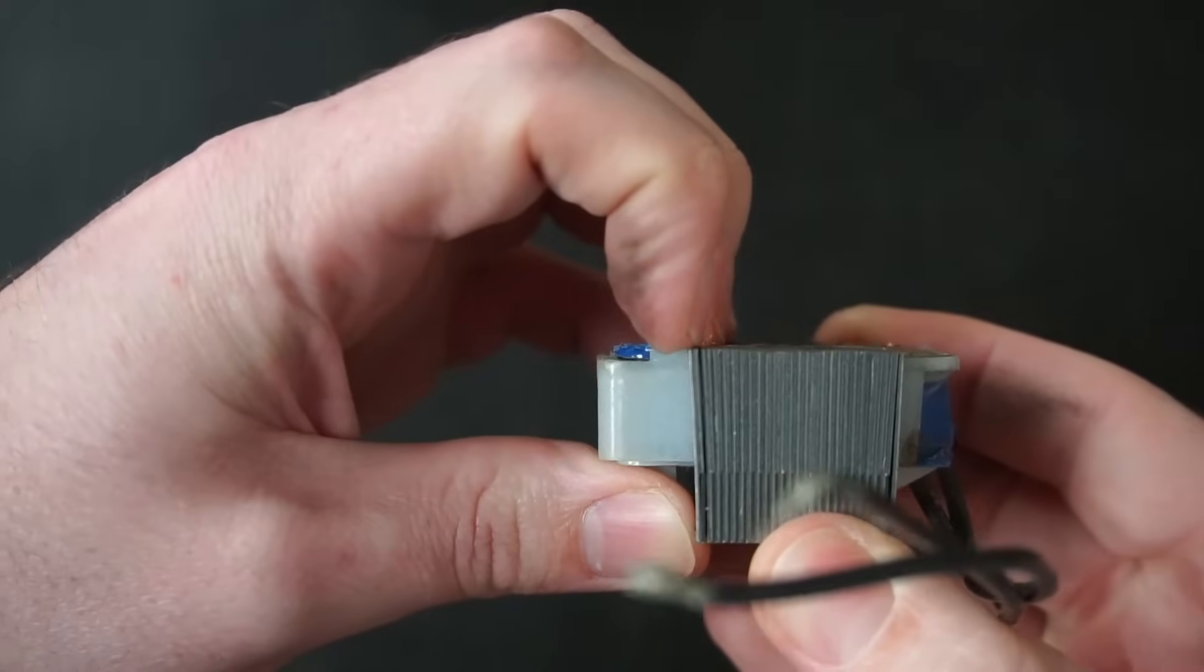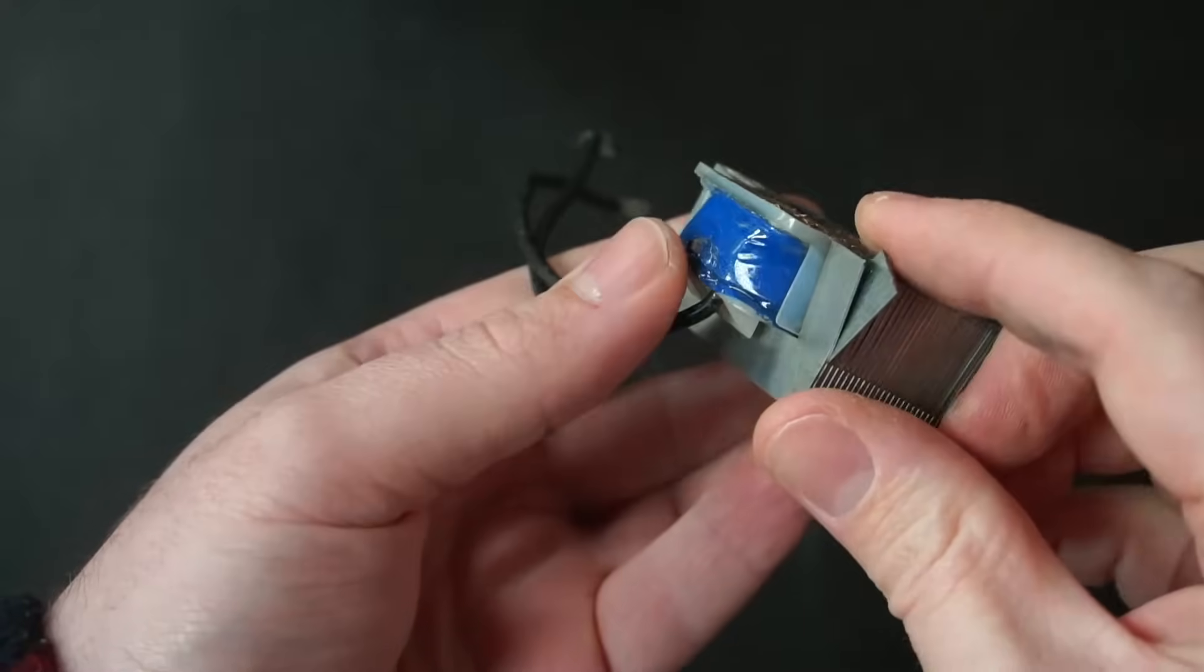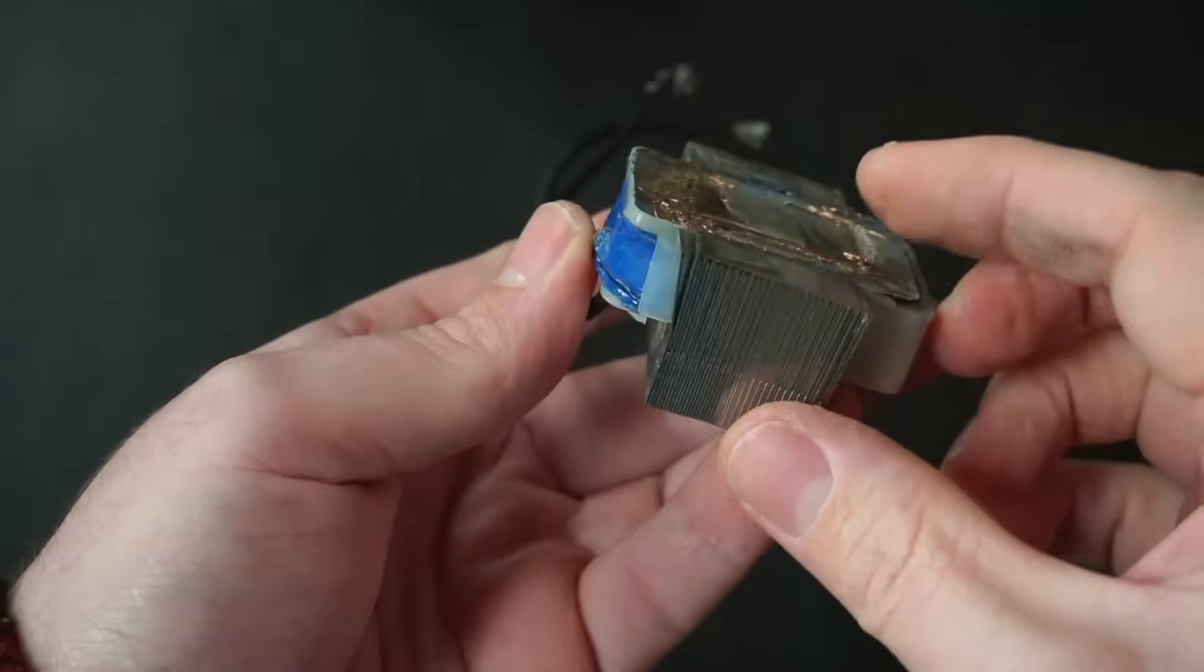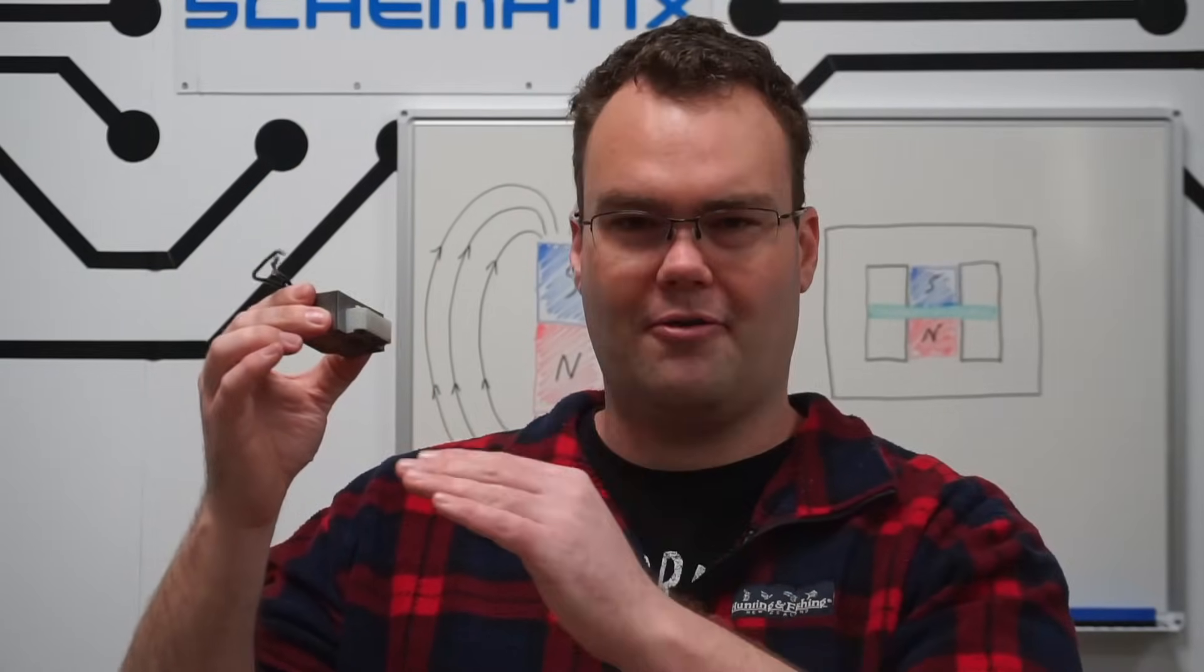One of the downsides of cutting into a transformer's core was the laminated metal sheets began to separate. To prevent this from happening to my next transformer, I'll weld the laminates together.